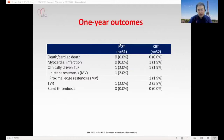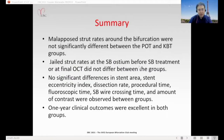One-year outcomes: TLR was observed in one patient in the POT group and one patient in the KBT group. In summary, malaposed strut rates around the bifurcation were not significantly different between POT and KBT groups. Jailed strut rates at the side branch ostium before and after side branch treatment did not differ between groups. No significant difference in stent area, stent eccentricity index, dissection rate, procedural time, fluoroscopic time, side branch wire crossing time, or contrast amount.